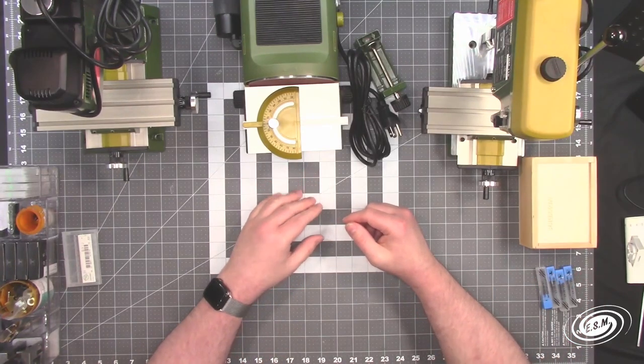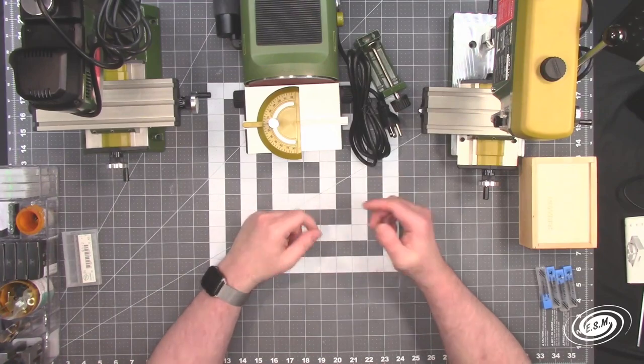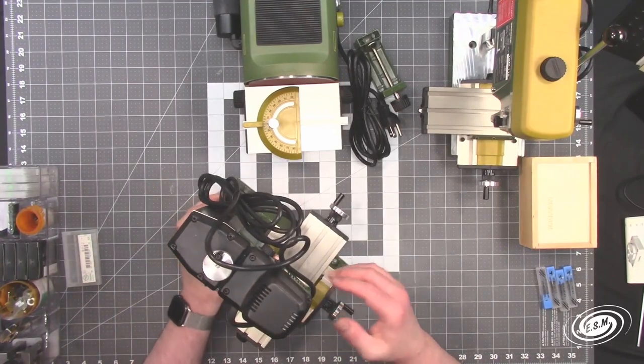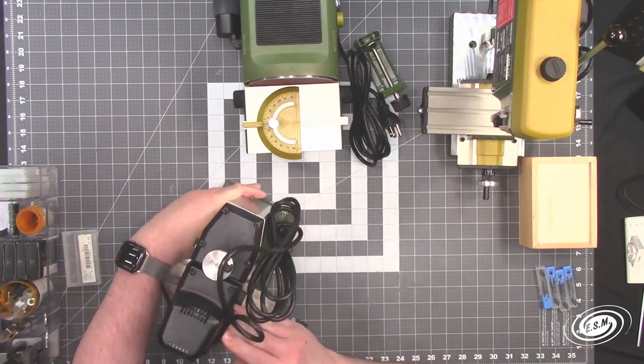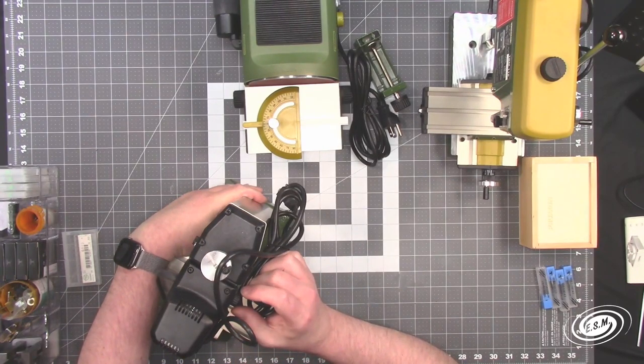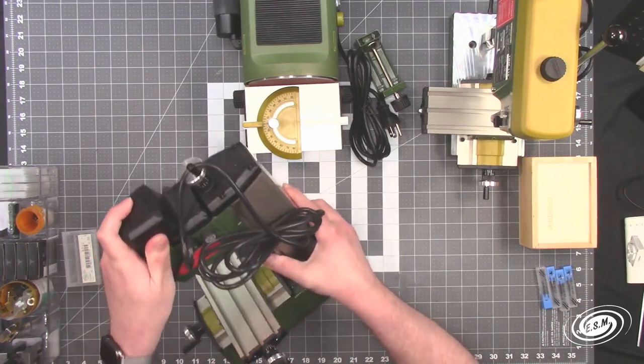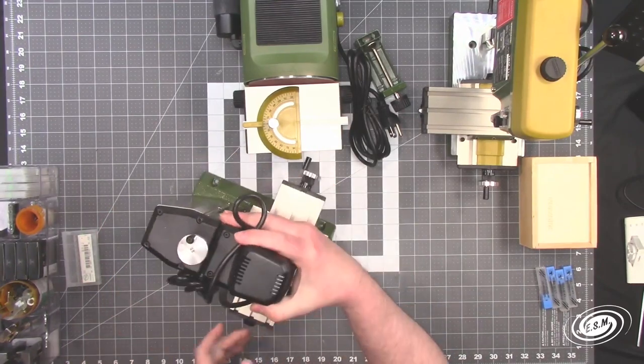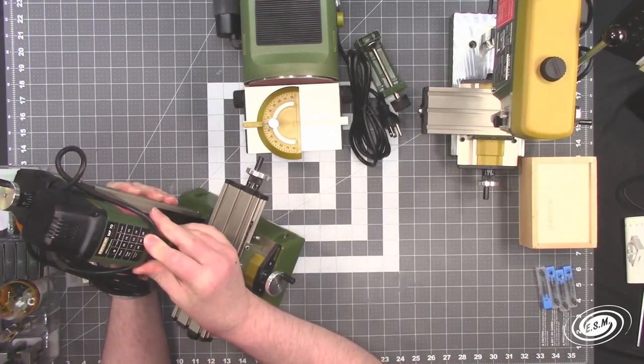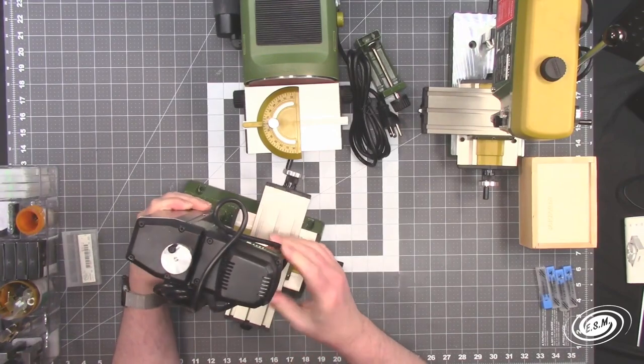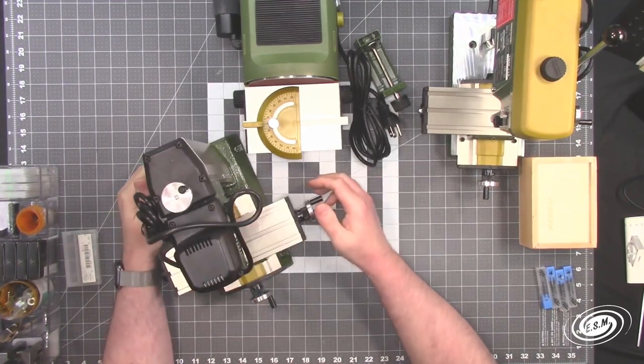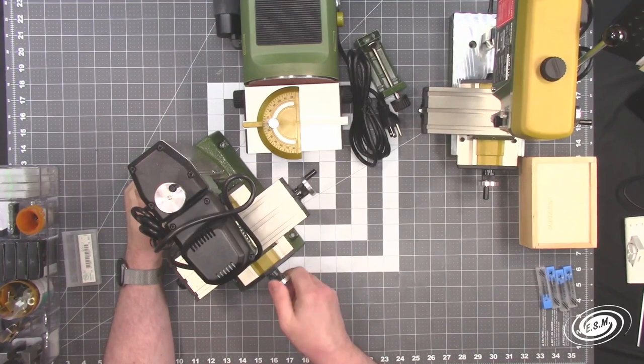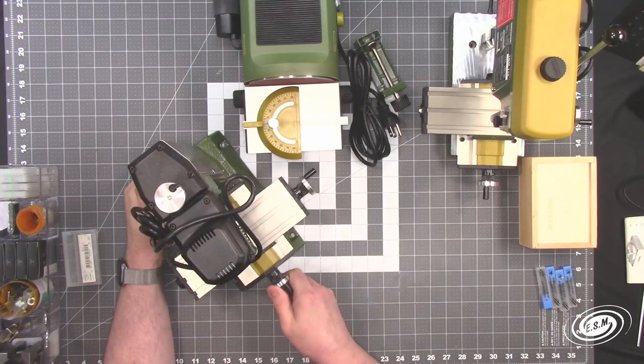With the Proxxon Mini Mill here you have different variable speeds between 5,000 RPMs and 20,000 RPMs. You have a little dial switch here on the side and then you have your power switch. You have some recommended feeds and speeds for steel, cast iron, aluminum, and brass. But I mainly use this for plastic hollowing out door frames and things like that. It has a micro adjust table so you can make very precise micro movements. It does a fantastic job.